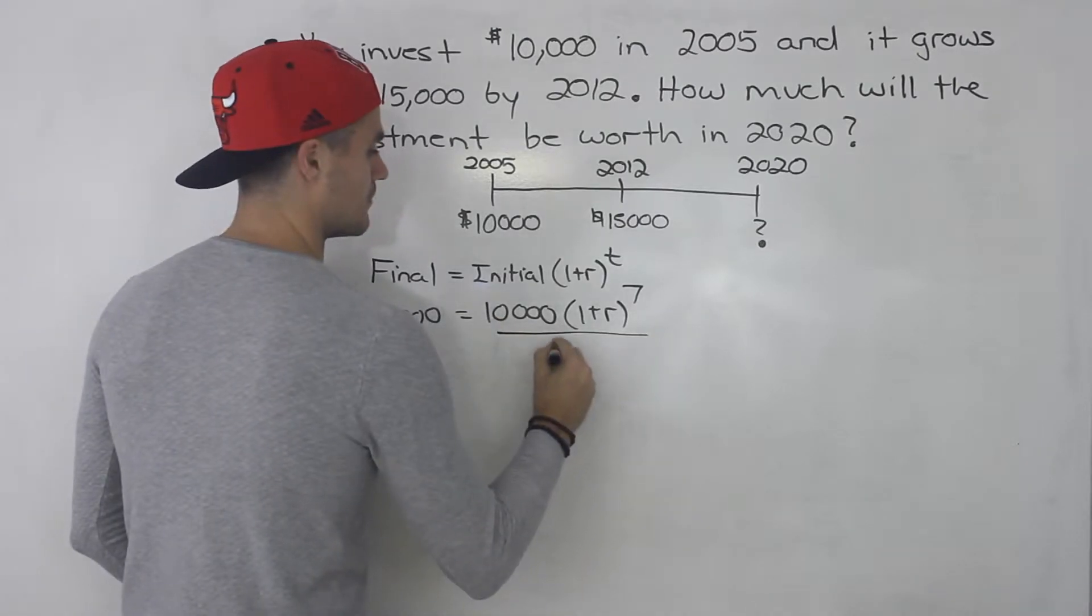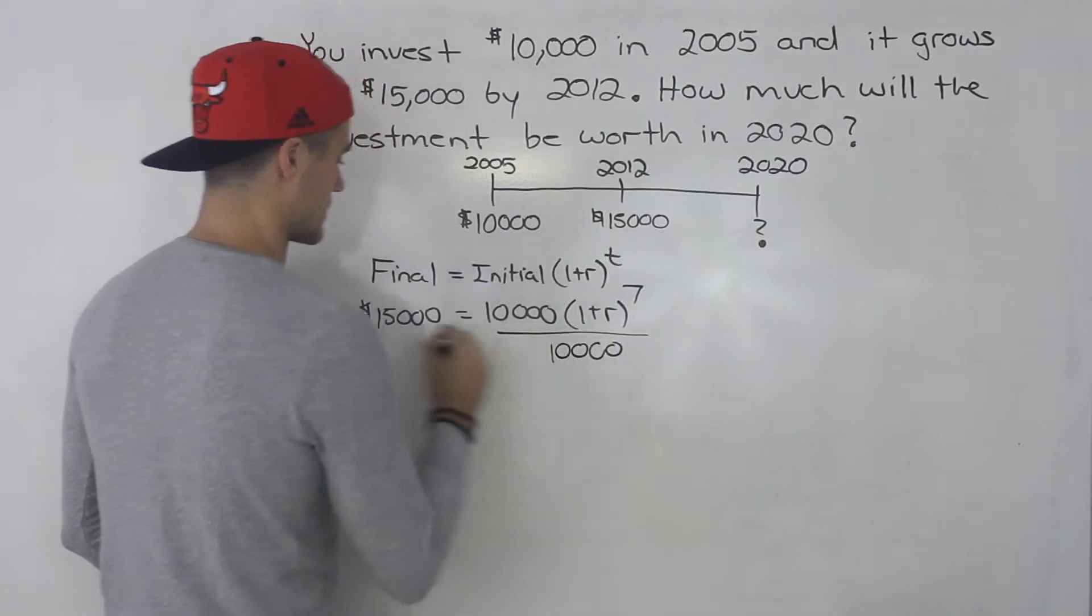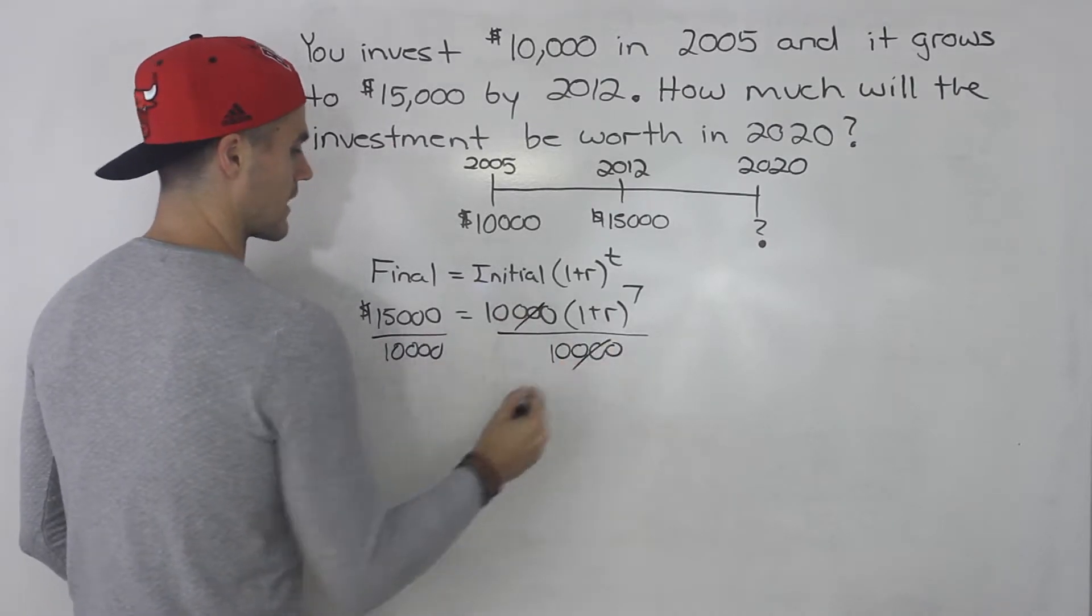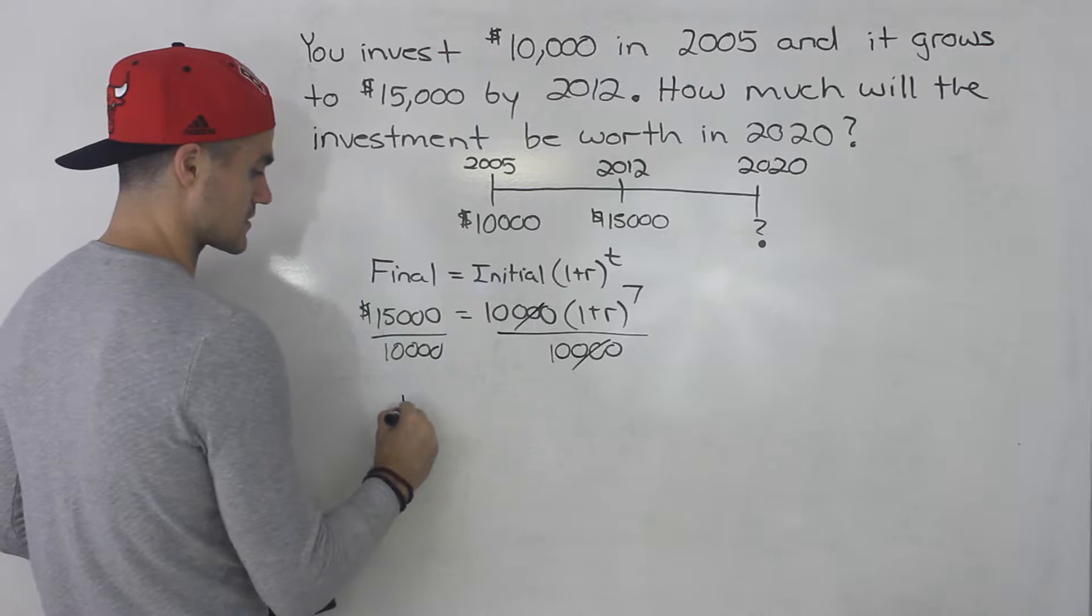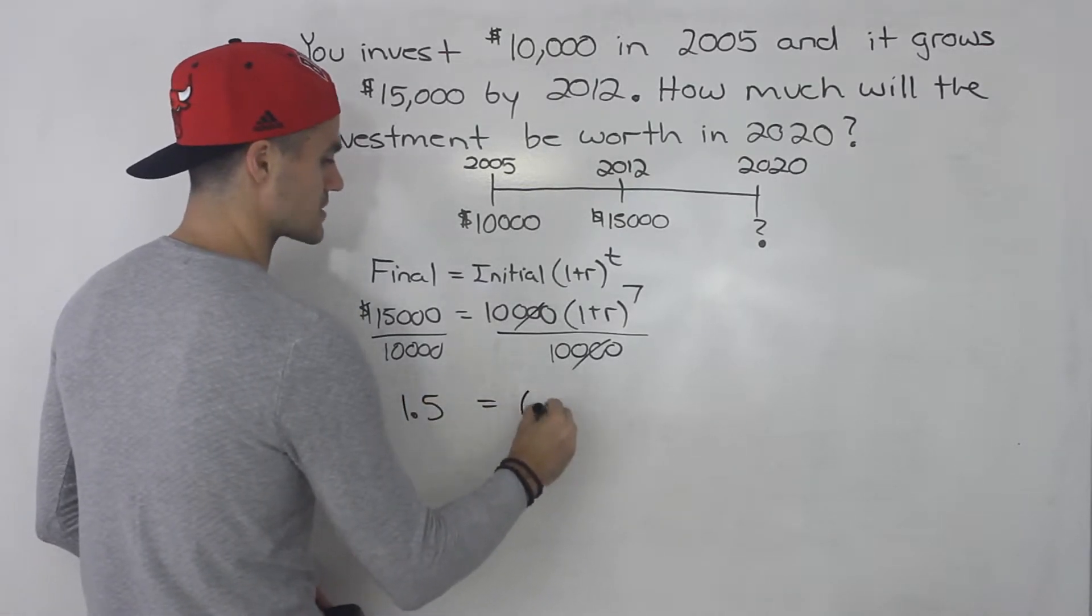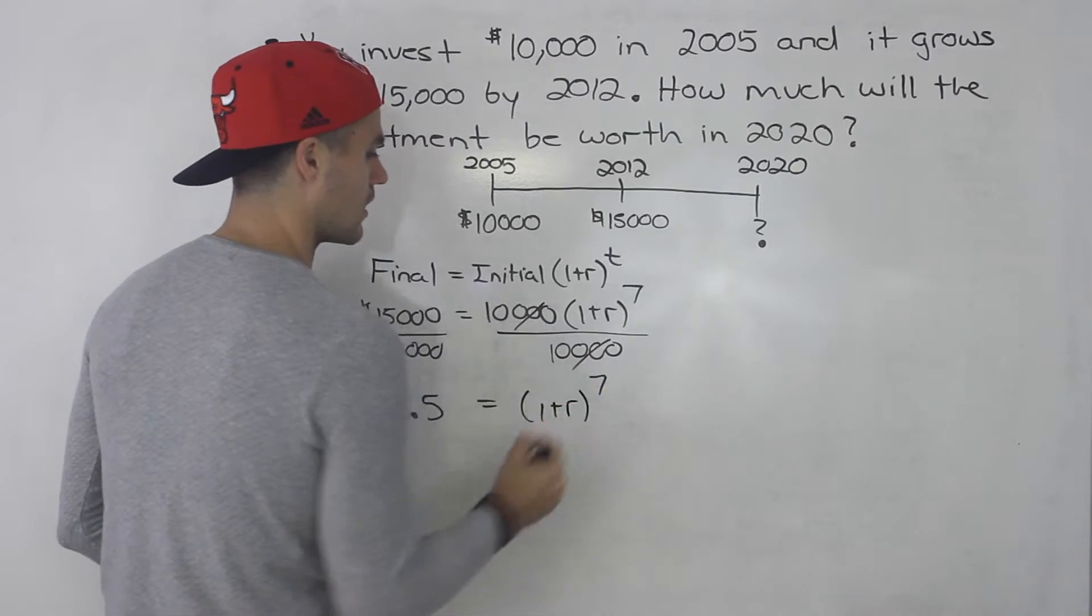So the way we do that, take both sides and divide them by 10,000 to get rid of that in front. So 15,000 divided by 10,000 gives us 1.5 and that's going to be (1 plus r) to the power of 7.